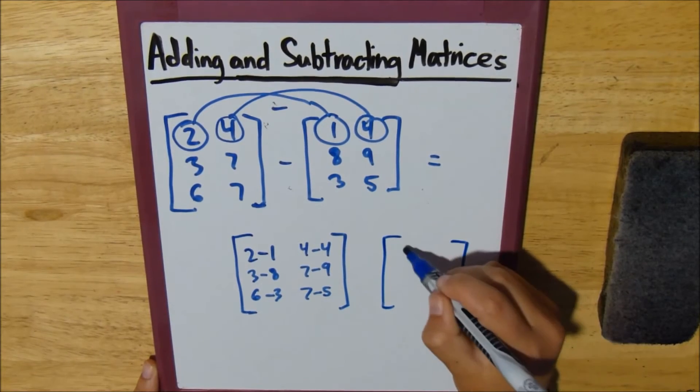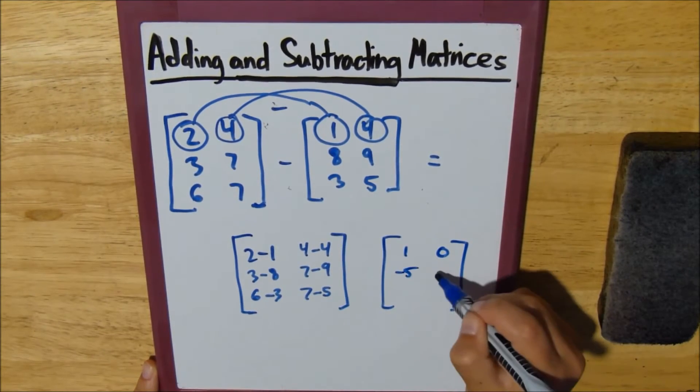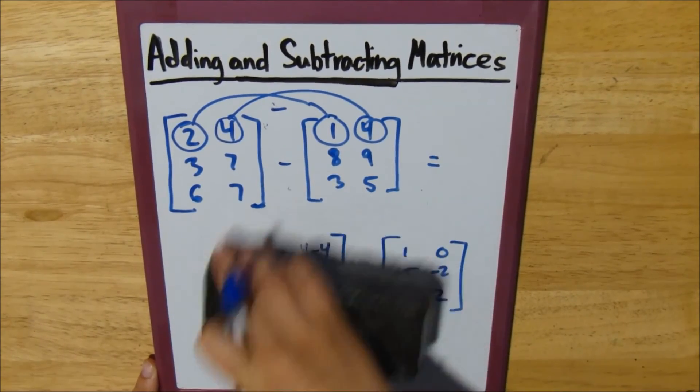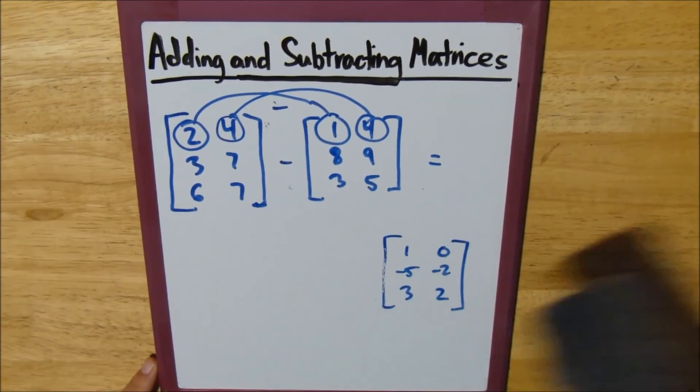Simplify it all out: 1, 0, negative 5, negative 2, 3, and 2. And there's our resulting matrix.